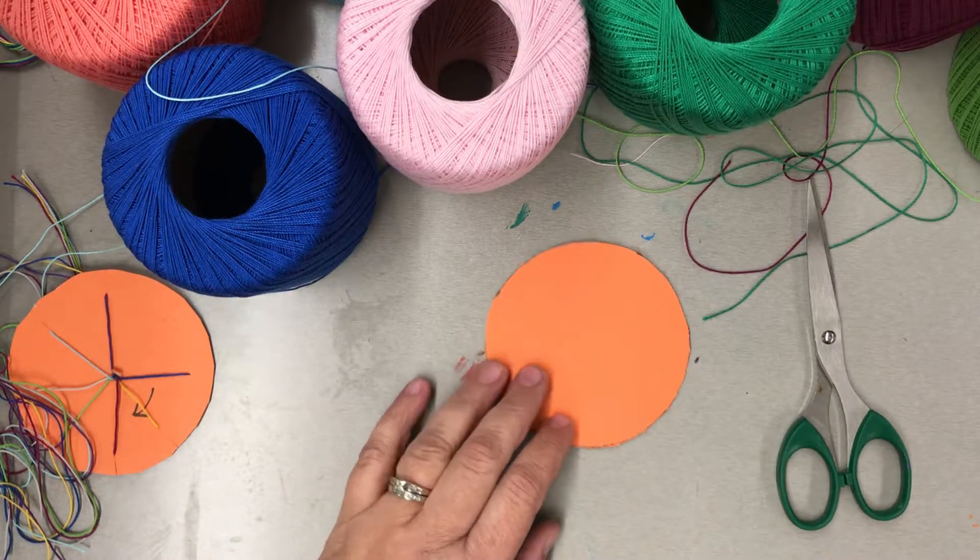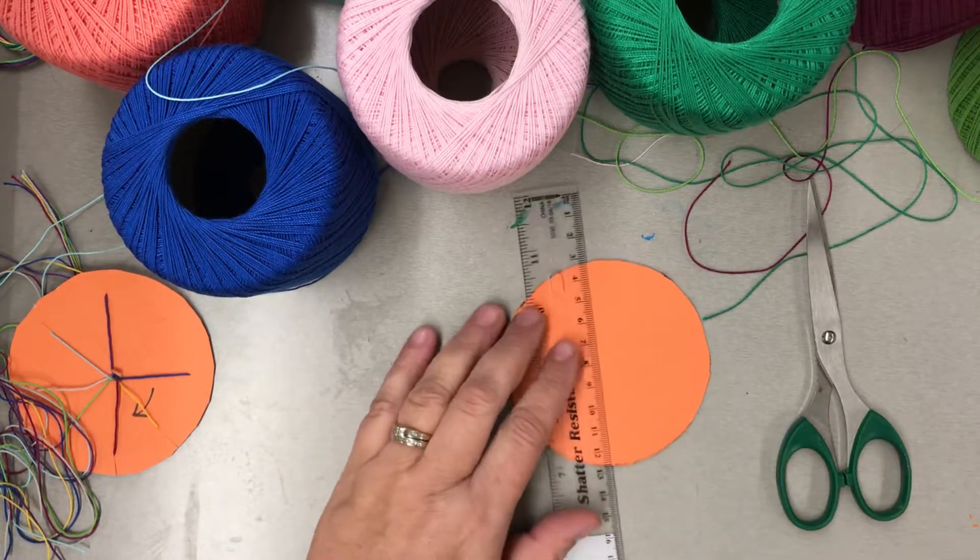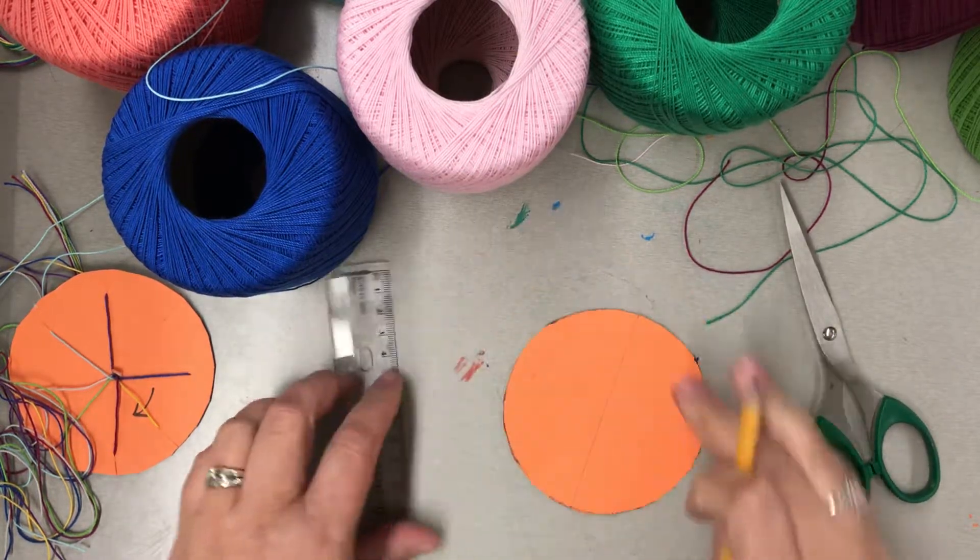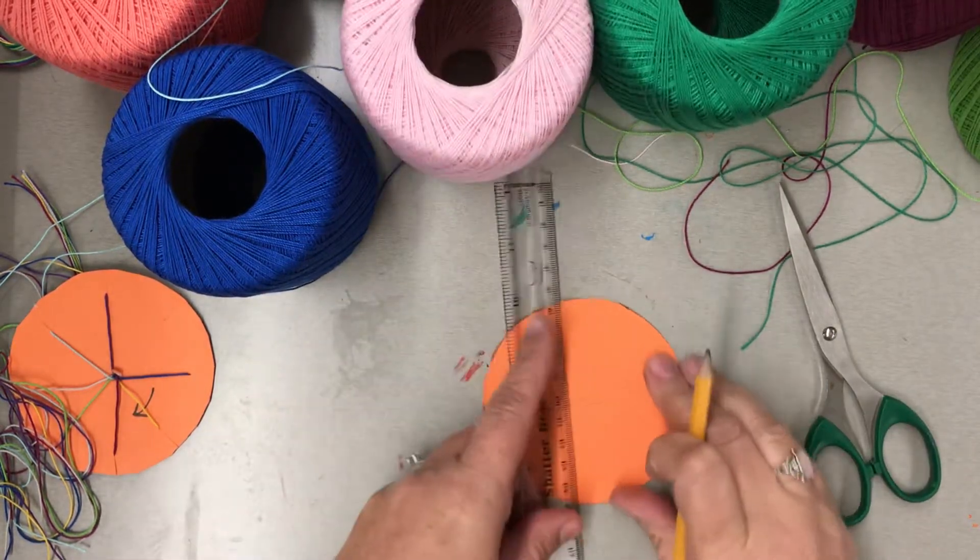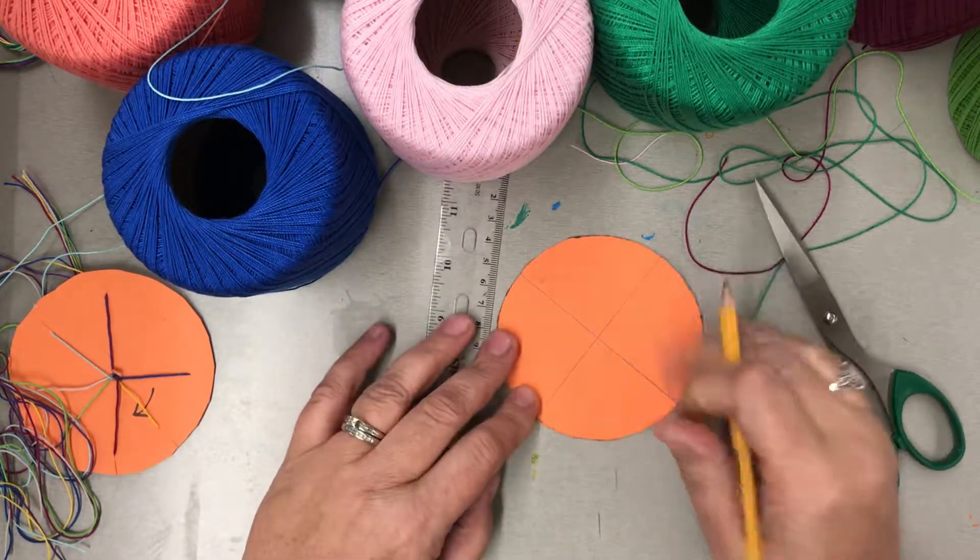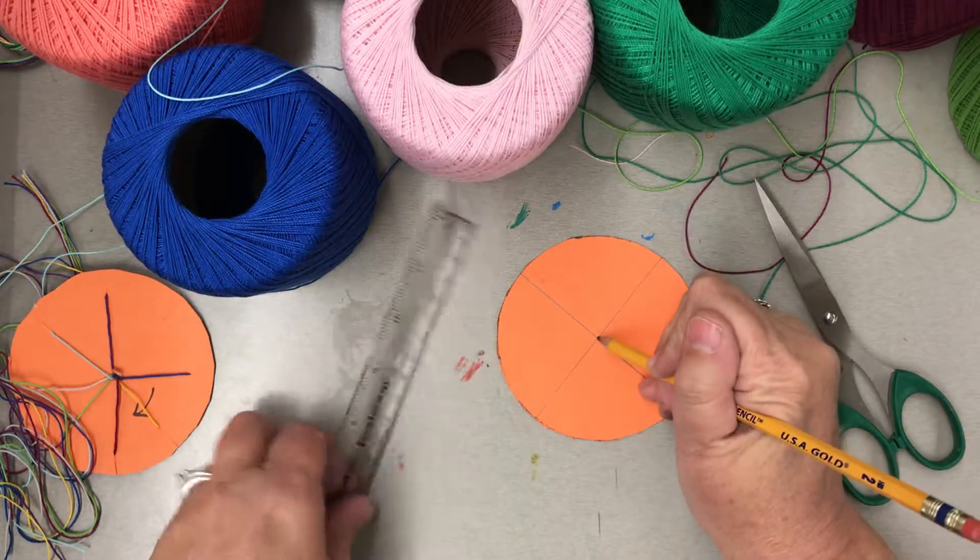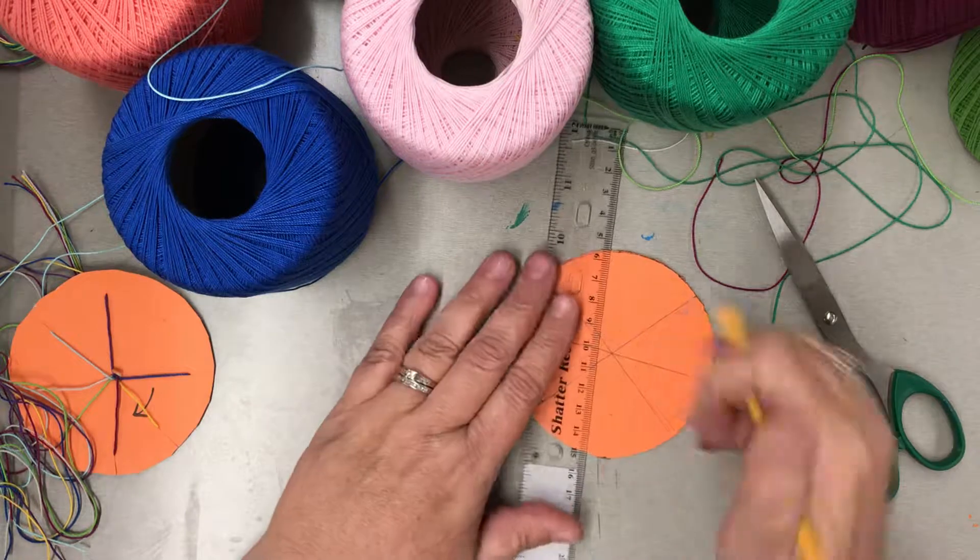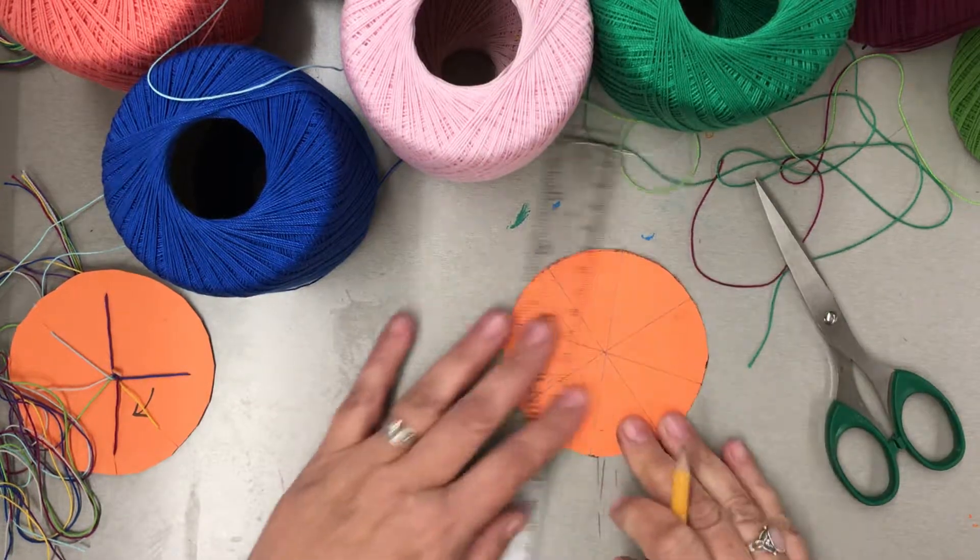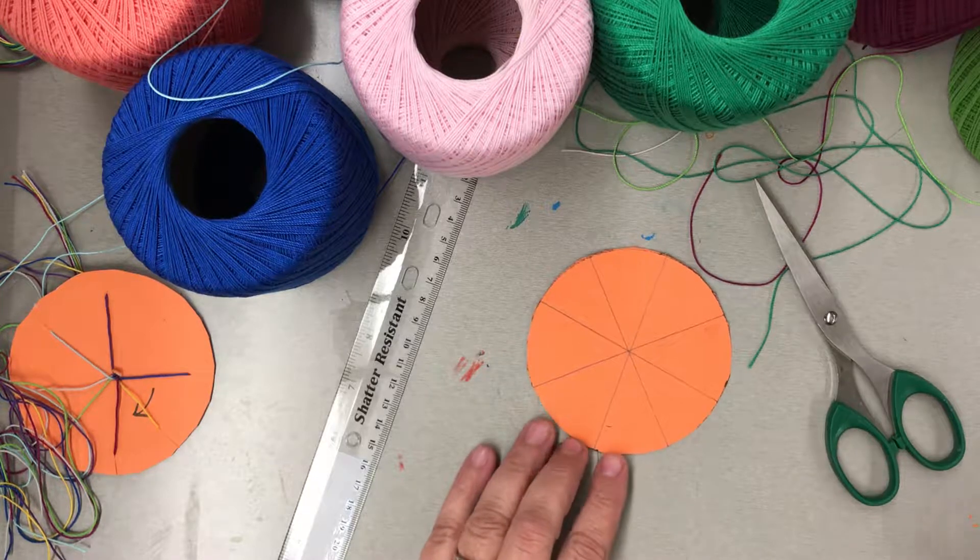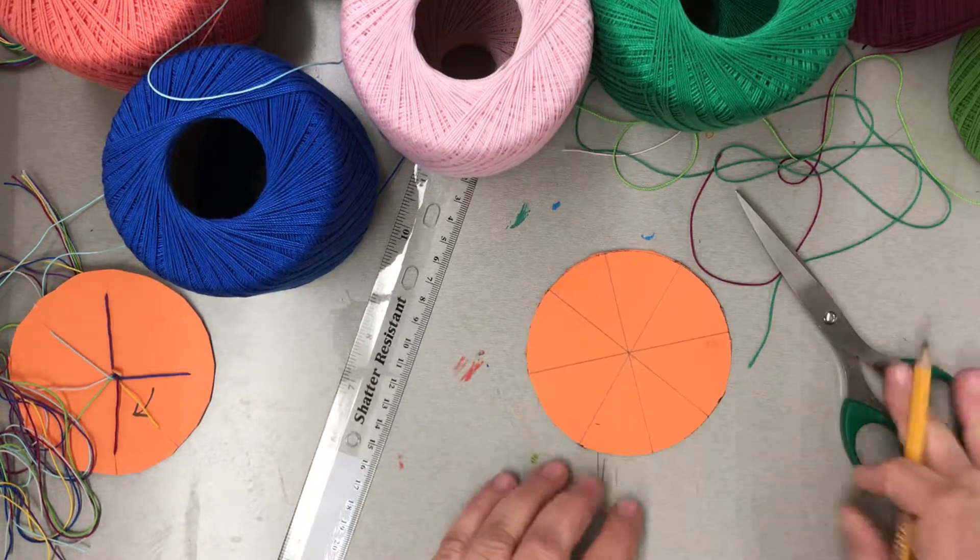The next thing you want to do is draw a line through the center of the circle, and then draw a line through the center going this way. And then draw another line and another line. You just want an eight piece pizza drawn on there. Try to get your lines as even as possible.